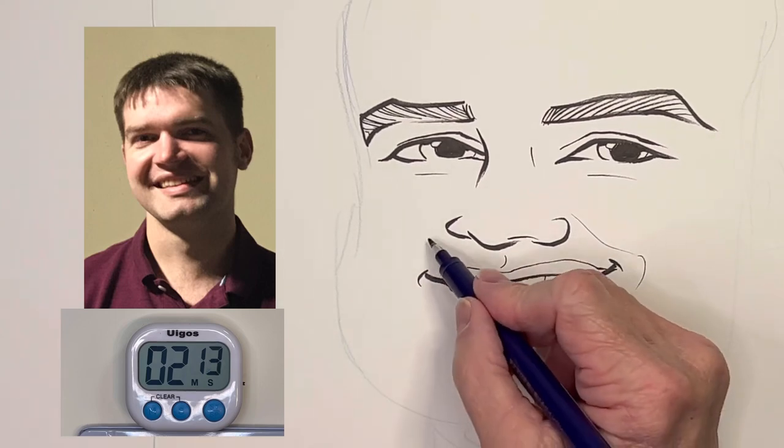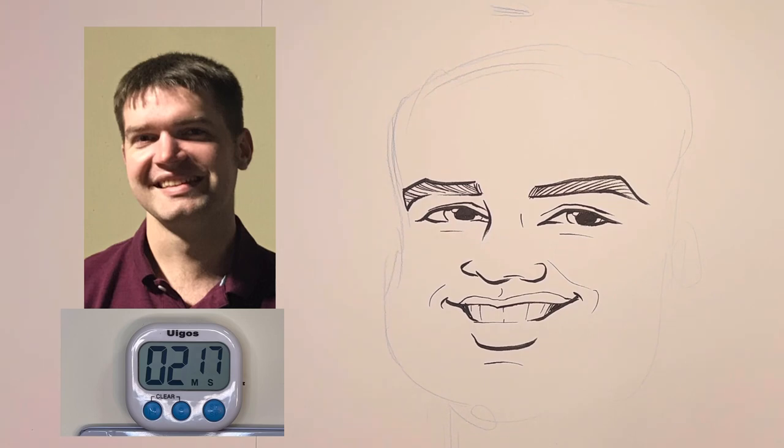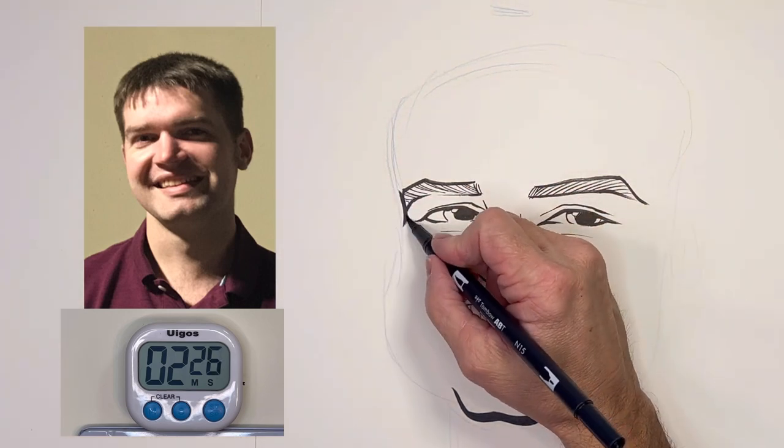Less than two minutes left. Time to start drawing the outline of the head shape. His chin is kind of wide with a deep divot in it, so I draw that first. That'll be the anchor for my other lines.